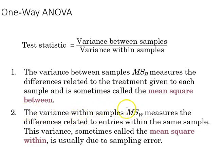Alternatively, the variance within samples denoted by MSW measures the difference related to entries within the same sample, sometimes called the mean square within, usually due to sampling error.